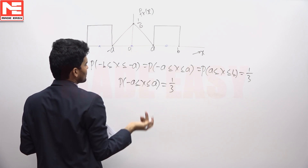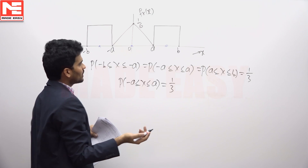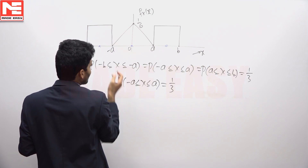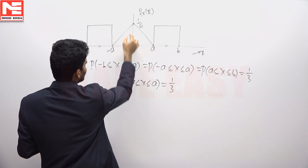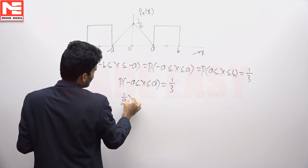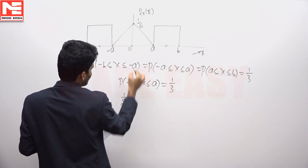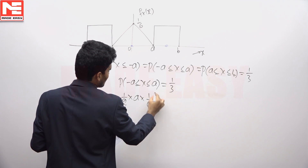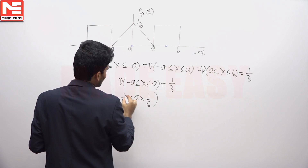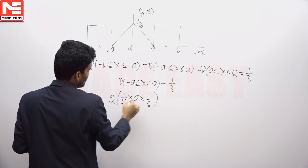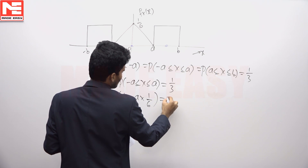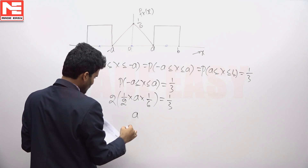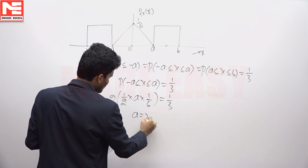To find probability from the density function, we calculate the area from minus A to A. It is a right angle triangle, so: half times base A times height 1/6, and we have two such right angle triangles, so multiplied by 2, equals 1/3. From this, A equals 2.